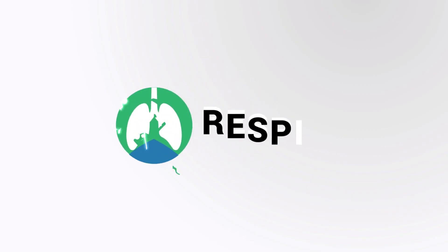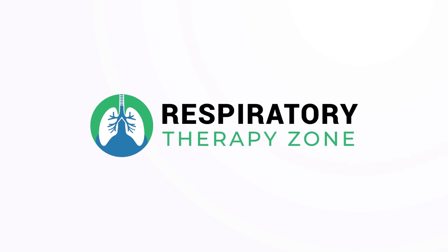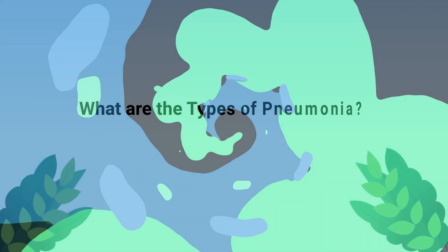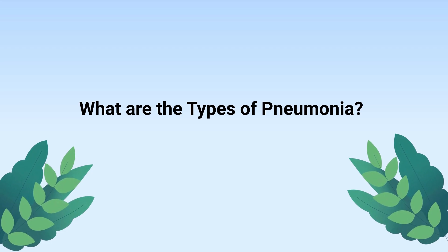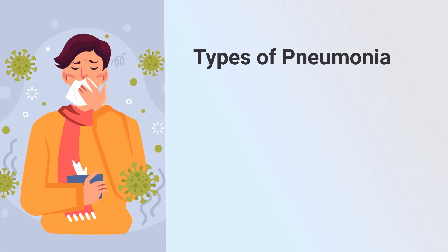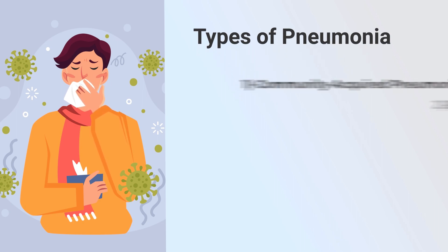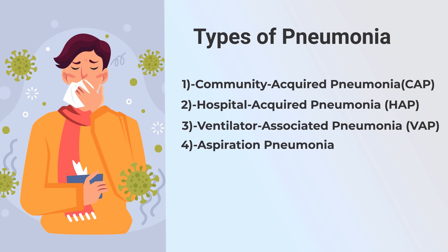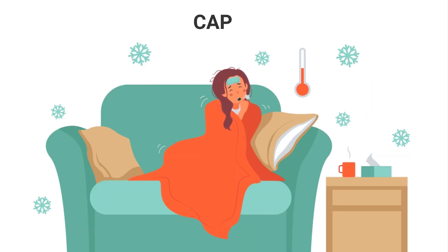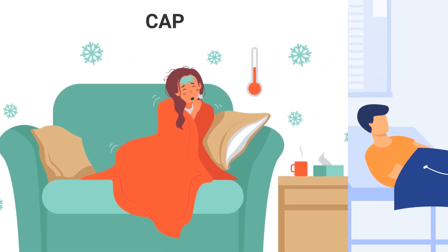So what are the types of pneumonia? Pneumonia is often classified according to how the patient acquired the disease. Here are the different types: community-acquired pneumonia, hospital-acquired pneumonia, ventilator-associated pneumonia, and aspiration pneumonia. Community-acquired pneumonia is when a patient gets it outside of the hospital.